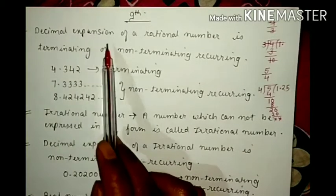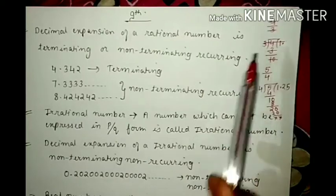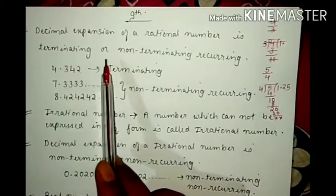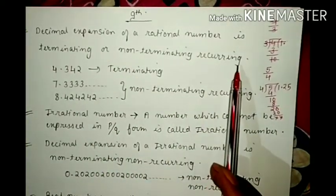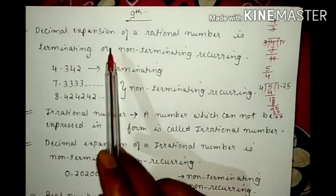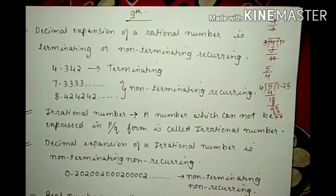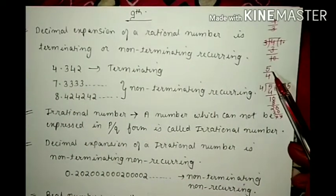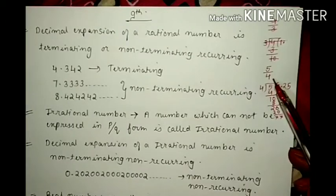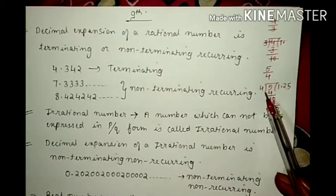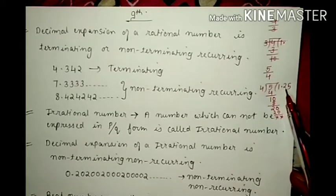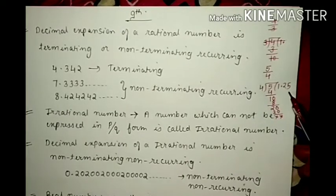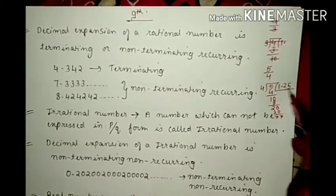The decimal expansion of a rational number is terminating or non-terminating recurring. What is decimal expansion? Suppose a number is 5 by 4, that means we have to divide 5 by 4. When we divide this, the answer is 1.25. This is called your decimal expansion.